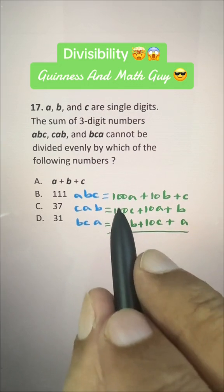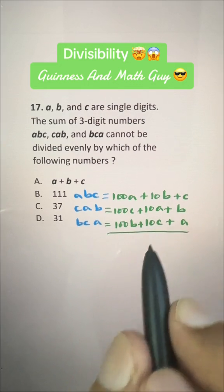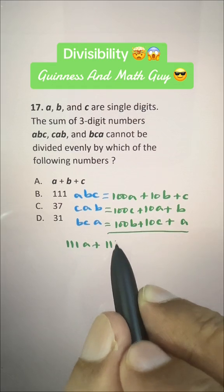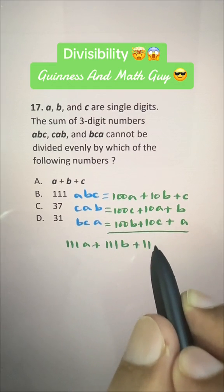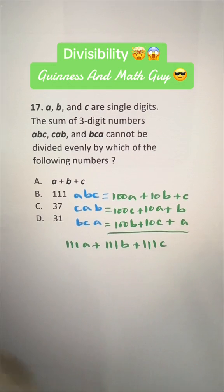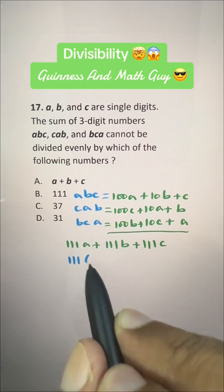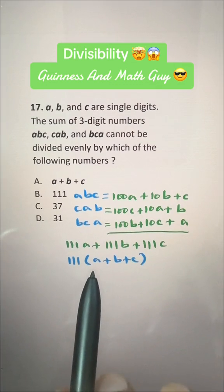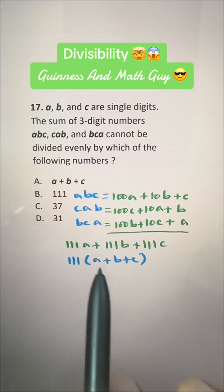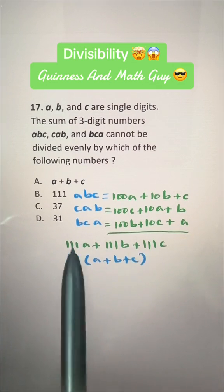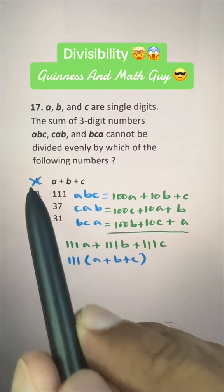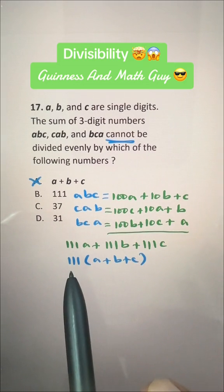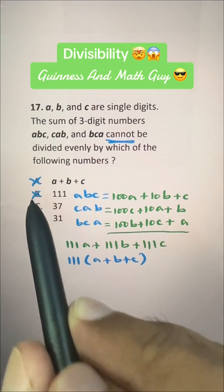Now if we add all of these, we have 100A plus 10A plus A — this is 111A — plus 111B, plus 111C. And if we take 111 as common, we have 111 times (A plus B plus C). Clearly, A plus B plus C is a number, whatever this sum is, it is a factor of this big number. So this is not our answer — it says 'cannot be.' 111 is also a factor of this number, so this is not our answer either.